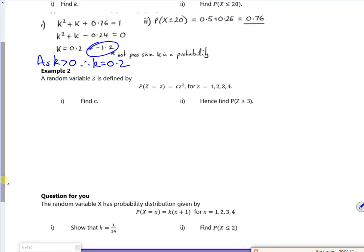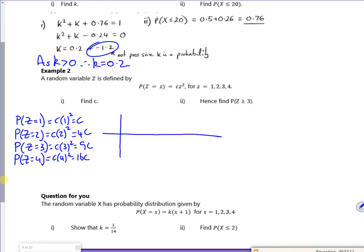So example 2. It's given us an equation to create the values for. So if z is 1, it's c lots of 1 squared, which is c. If z is 2, it's c lots of 2 squared, so 4c. If z is 3, c lots of 3 squared, so 9c. And z is 4, c lots of 4 squared, 16c.